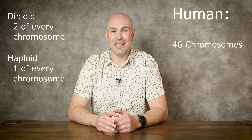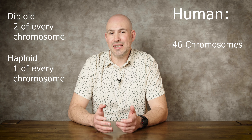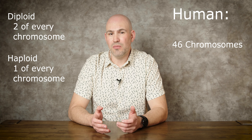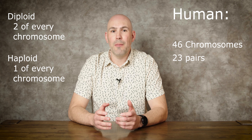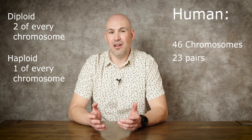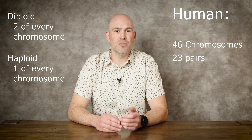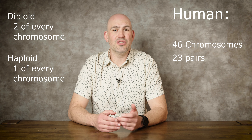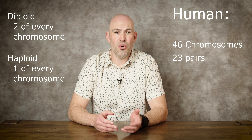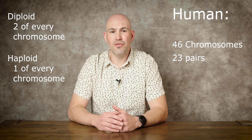I am a diploid organism. Diploid — di meaning double. I have two of every chromosome. There are some organisms that are haploid. Hap meaning half, so haploid. These organisms only have one of every chromosome. But I have two of every chromosome.